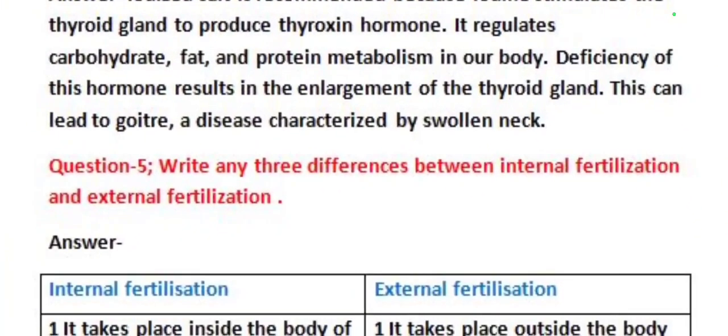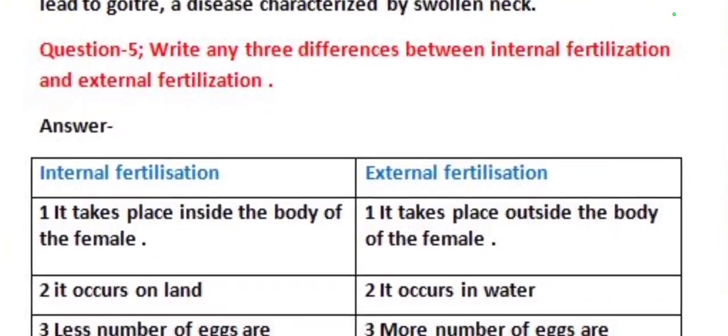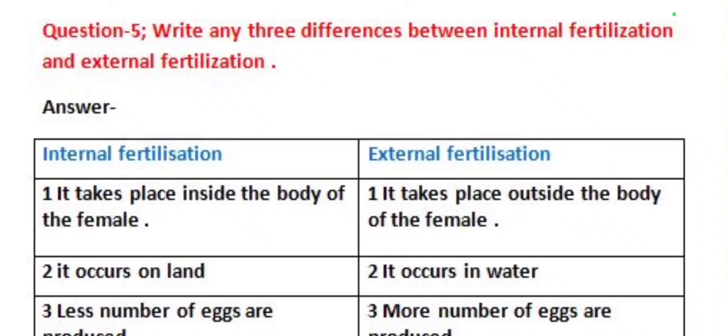Our next question is: write any three differences between internal fertilization and external fertilization. Internal fertilization takes place inside the body of the female, whereas external fertilization takes place outside the body of the female. Internal fertilization occurs on land, whereas external fertilization occurs in water.